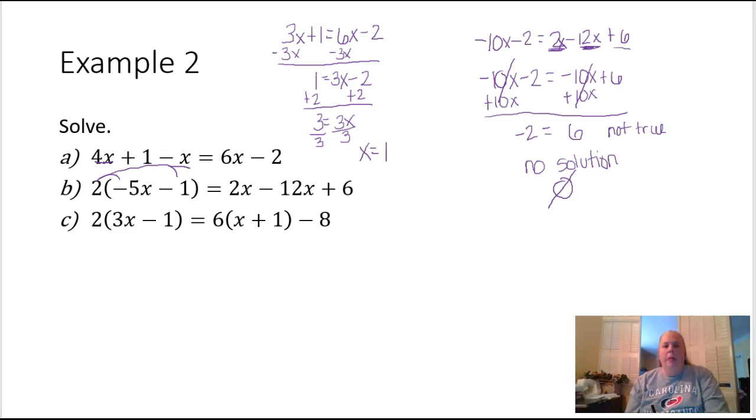In C we're going to start off by distributing the 2 into the parenthesis. This is going to give us 6x minus 2. I'm going to distribute the 6 into the parenthesis over here. This is going to give me 6x plus 6 minus 8.